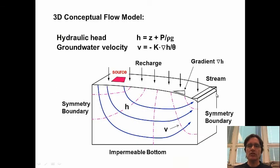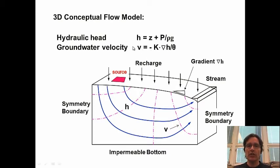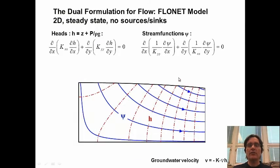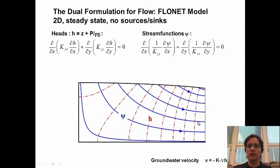Looking at the development of a 2D vertical model: we want to solve for hydraulic heads, and using the gradients from the heads we're interested in the velocities, because the velocities will be transferred to the transport model and will determine the behavior of the contaminants. One method to solve this is using a flow net model — we're interested in solving for hydraulic heads as well as stream functions. Stream functions are tangent everywhere to the flow lines and follow the flow lines. There are some numerical advantages to solving for stream functions, although they're only valid for a 2D vertical system, not in 3D.